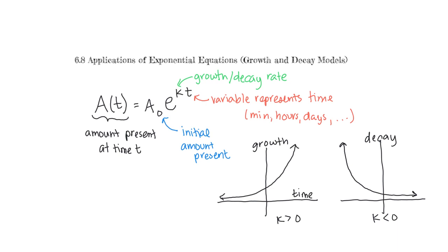It's worth noting that the x-axis here represents time — it's our t-axis — and the y-axis represents quantity or amount present. With the growth function, the further time goes, the more of the substance we have — the amount is getting higher. But as time goes on for the decay function, the substance becomes less and less as time goes on.